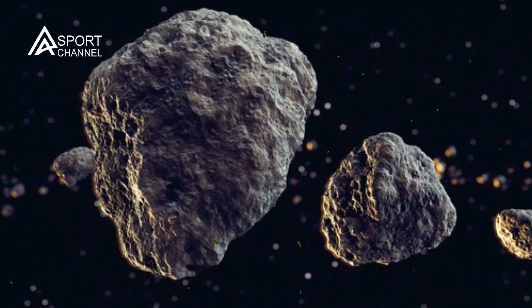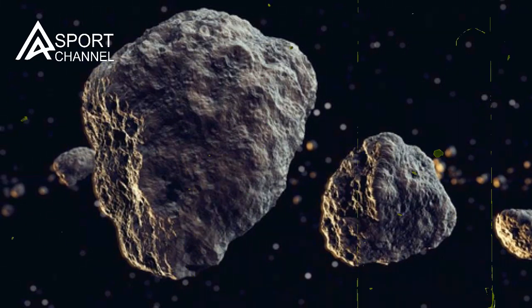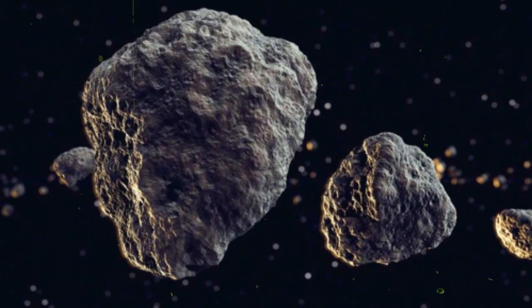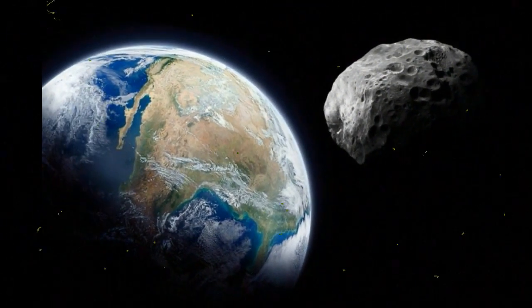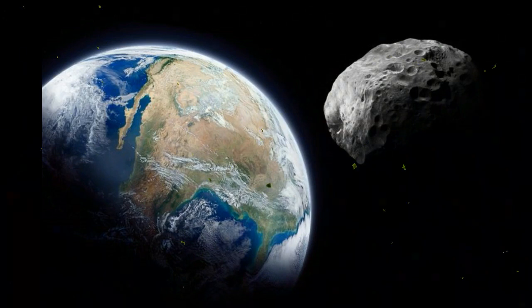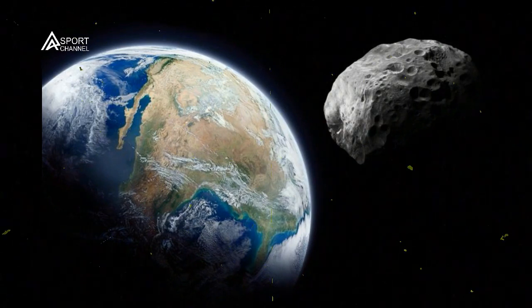For an object to be considered dangerous, it has to measure at least 460 feet (140 meters) in diameter, NASA says. UA1 may not have been big enough to threaten the planet, but what about bigger asteroids that might be headed our way?